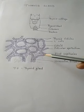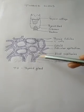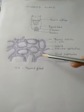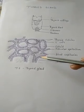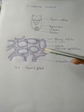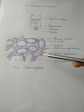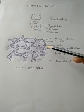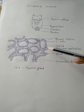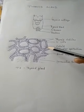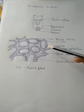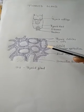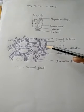These follicles are surrounded by a thin layer of connective tissue. The thyroid gland is richly supplied with blood vessels and capillaries. The colloid acts like a reservoir, and it is within the colloid that the production of thyroid hormone takes place.